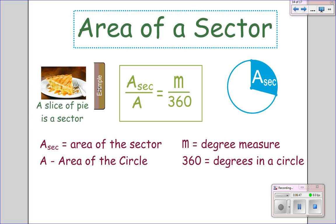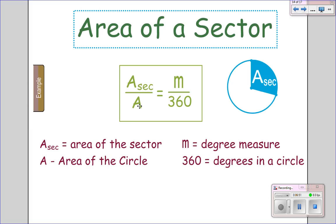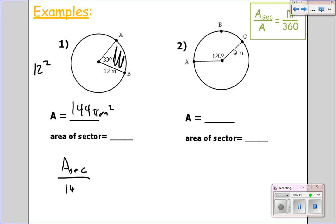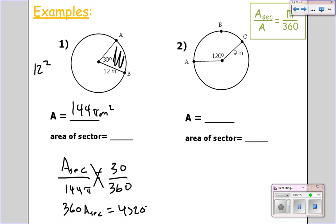Instead of arc length on top, it's the area of the sector over the total area. Area is the inside portion; arc length is the outside. For this circle, I want to know the area of the shaded sector. Area of sector over total area — radius is 12, so 12 squared is 144 pi meters squared — equals 30 over 360. Cross multiply: 360 times the area equals 4320 pi. Divide by 360 — the area of the sector is 12 pi meters squared.